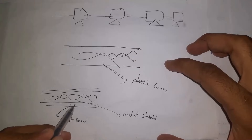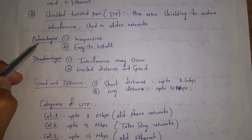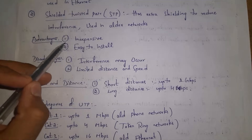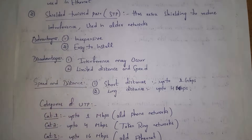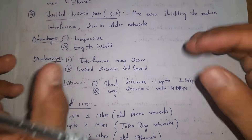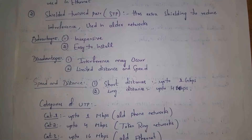Advantages of twisted pair cable: first, it is inexpensive — twisted pair cable comes with very low cost. Second, it is easy to install. Disadvantages: first, interference may occur — for example in telephone networks sometimes there will be a signal break due to interference. Second, limited speed and distance — data travels slowly and we cannot use these cables over long distances. For short distances speed is 1 Gbps, and for long distances it drops to 4 Mbps.